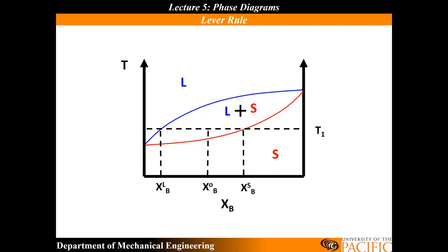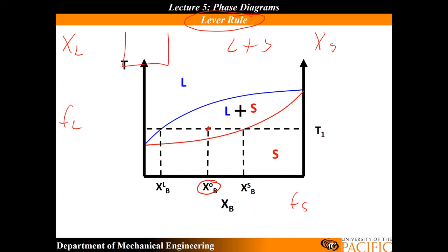One thing you might also be asked — and what we're going to get into — is the lever rule. When we're in, let's say, composition X naught B right here in the two-phase region, liquid plus solid, I may ask: what's the composition of the liquid phase? What's the composition of the solid phase? Or better yet, what is the fraction that's in liquid? What's the fraction of my material that's in solid? Because it phase separates — you have some solid regions and everywhere else there's liquid.